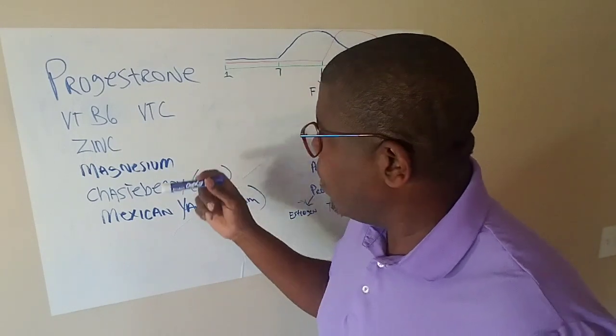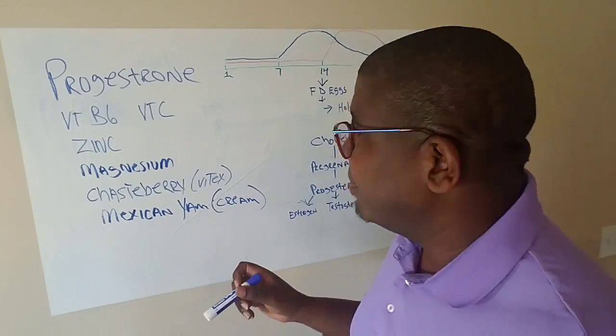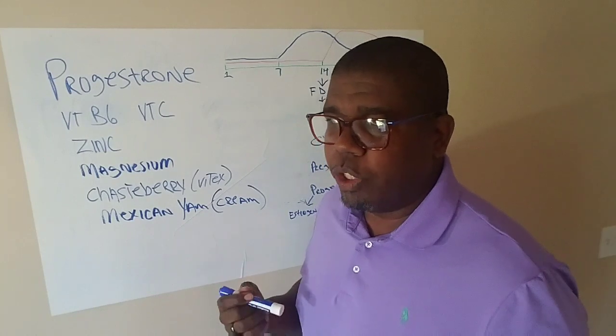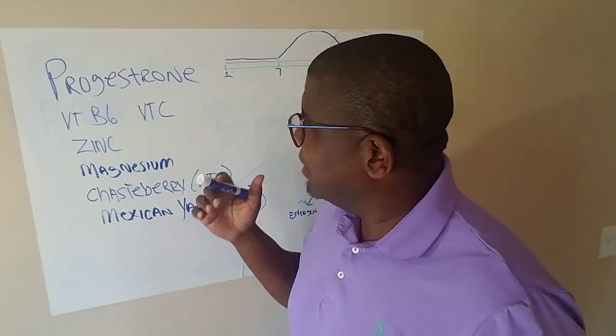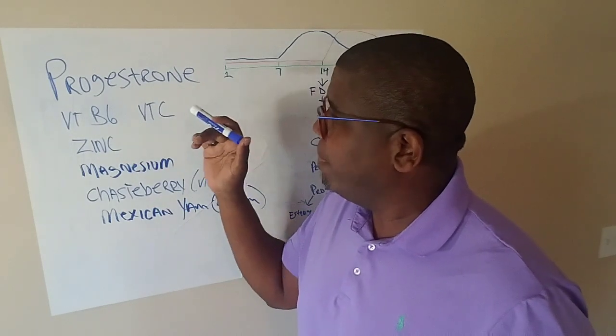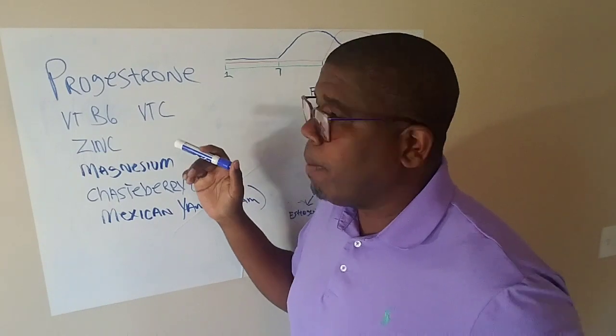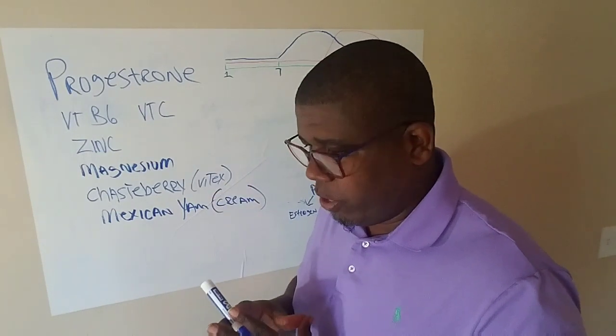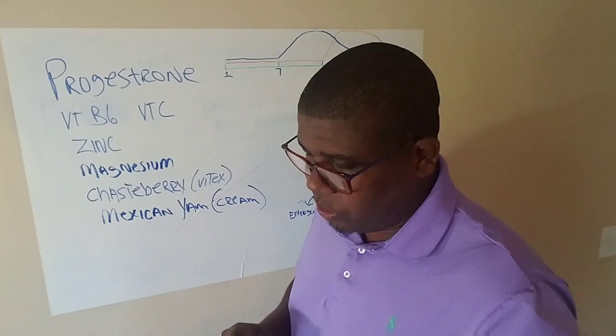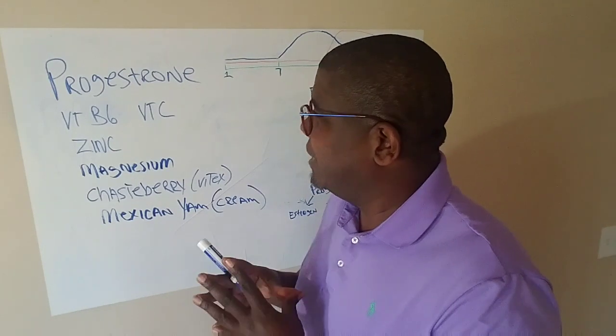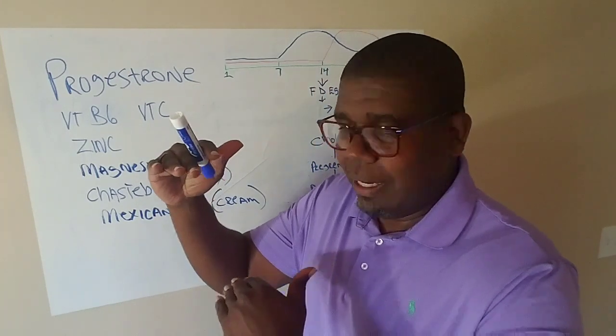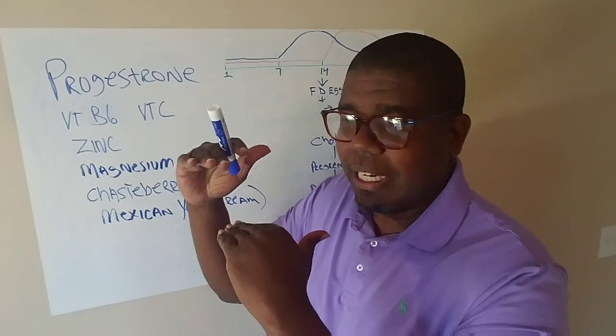Now again, progesterone is key to the mental and emotional state of our being, specifically and particularly in women. You want to try to make sure that we balance this progesterone out. Remember, progesterone is also the precursor to estrogen, testosterone, and adrenaline. We want to make sure we get progesterone back to the levels it needs to be. Progesterone should be here, those other three should be here, because progesterone is the producer of the other three.